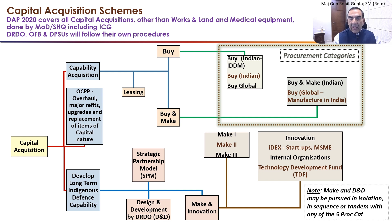In the Innovation scheme, Defense Excellence is primarily for startups and MSMEs, as well as internal organizations of the services. There is a fund called the Technology Development Fund, controlled by DRDO, which basically enables financing of these projects. A point to note: MAKE and Design and Development schemes can both be pursued in isolation, in sequence, or in tandem with any one of the procurement categories. So a scheme can proceed in the procurement categories as well as in BUY & MAKE and Design and Development simultaneously.